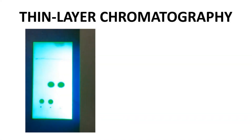Almost every organic chemistry student runs a TLC at some point during a teaching lab experiment. The most common simple method for detecting compounds on a TLC plate is with a UV lamp. Here is an image of a three-lane TLC plate used to monitor a reaction.